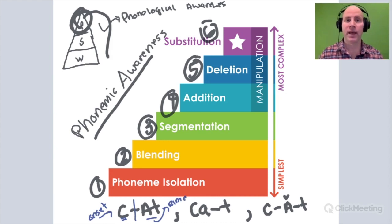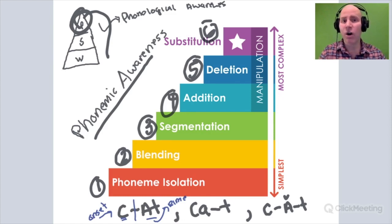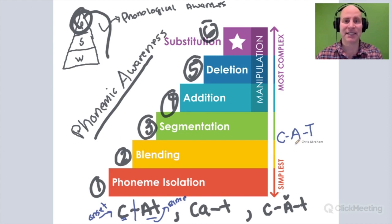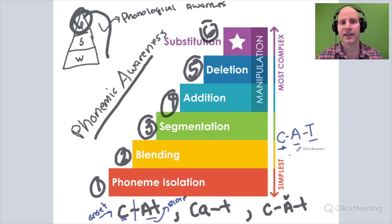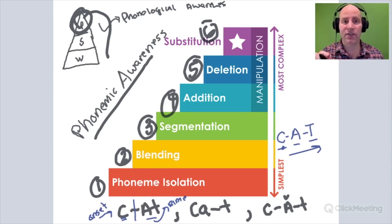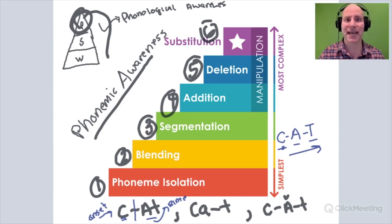Now let's look at blending and segmenting — a little harder. Can a child take a word like 'cat' and blend and segment all the individual sounds that make up that word? Cat is made up of individual phonemes — here we've segmented them, and now we blend them together: 'cat.' In this one, it's not just the beginning, end, or middle sound — it's all the sounds, identifying all the sounds in a word and then blending them together to say that word correctly.